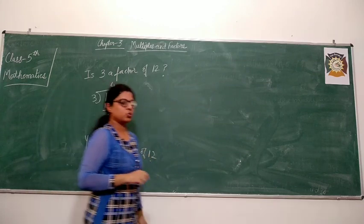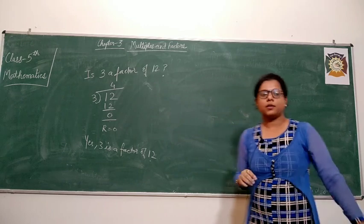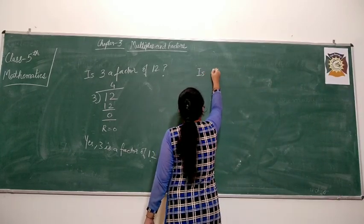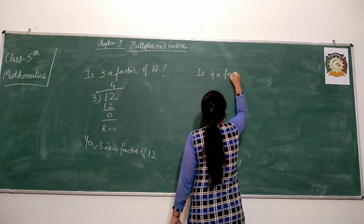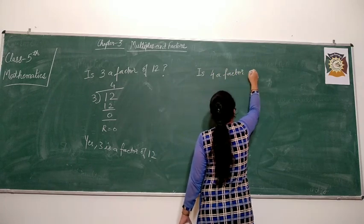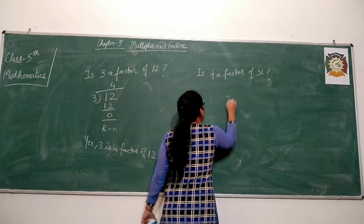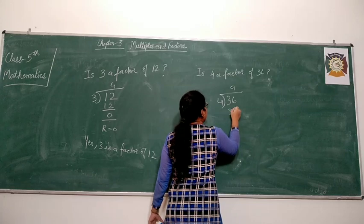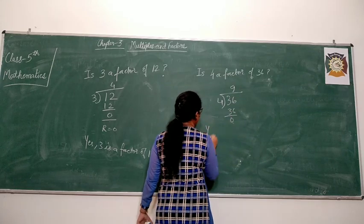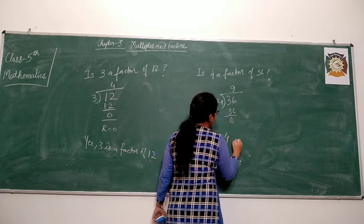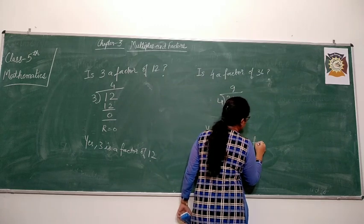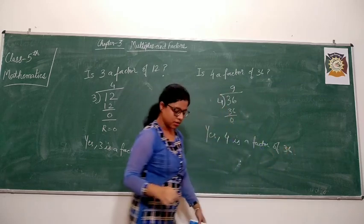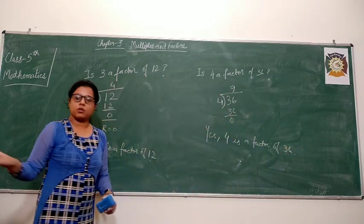Similarly you can do more examples. If you are asked: is 4 a factor of 36? Then you will check it by division. 36 divided by 4 — the remainder is coming out to be equal to 0. So yes, 4 is a factor of 36.